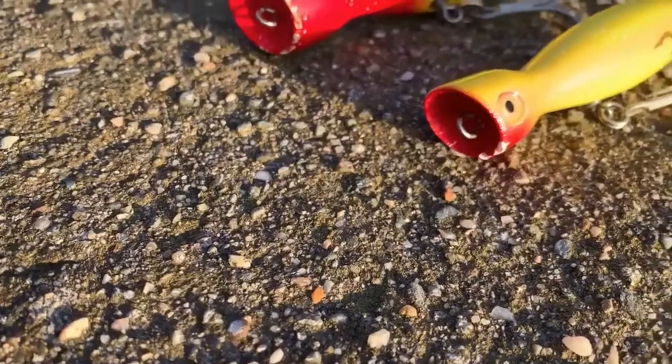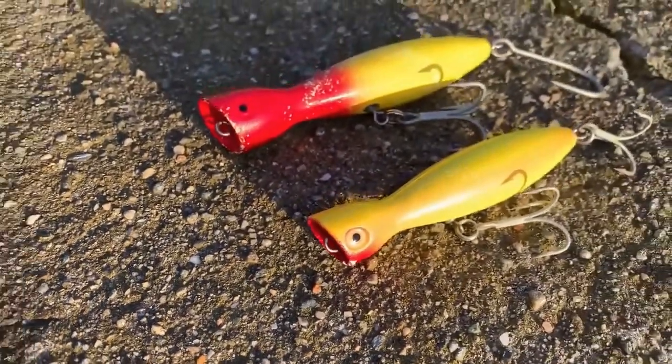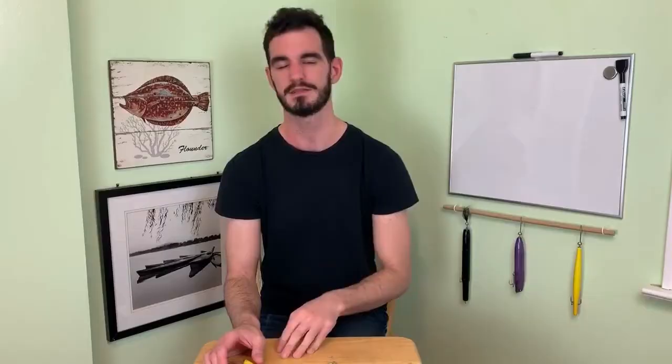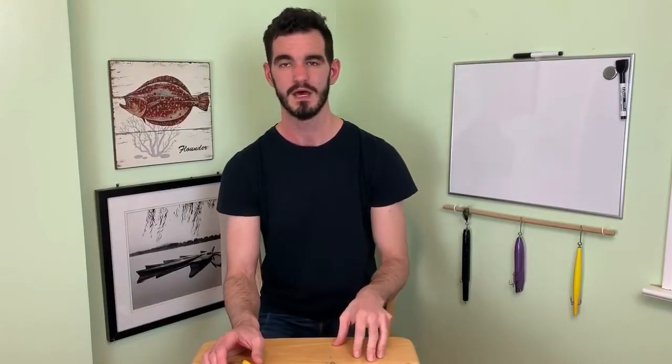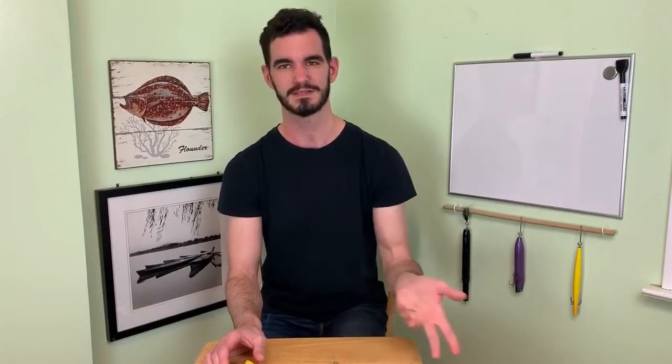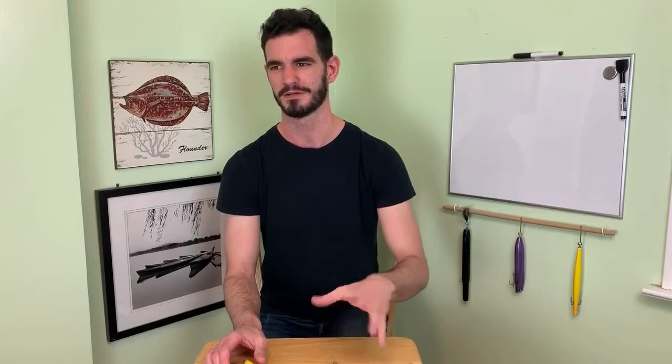So it was great for that. And next we have poppers. I keep it really simple with these. It's all Super Strike. I have their small and medium-sized poppers. I get them both in the slow sinking models. I'll probably be trying the fast sinking model this summer. It's heavier, it gets you a little more distance. This past season I actually used something a little unconventional when I needed the extra distance. I'll show that later in the video.